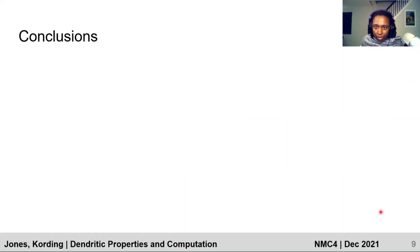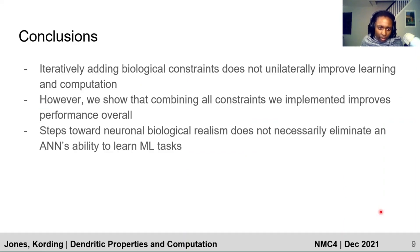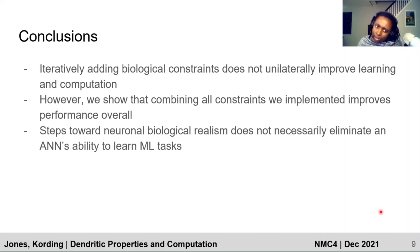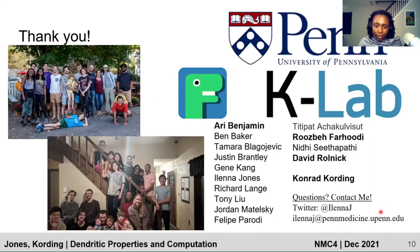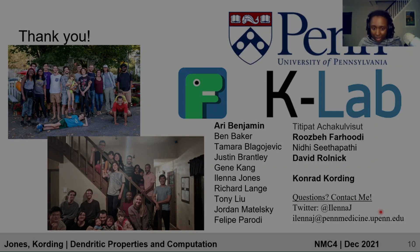In conclusion, iteratively adding biological constraints does not unilaterally improve learning and computation. However, we show that combining all constraints we implemented improves performance overall. Steps toward neuronal biological realism do not necessarily eliminate an ANN's ability to learn ML tasks. Thank you very much. I thank everyone in the Cording Lab for their help. If you have questions, please contact me.